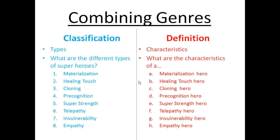Often classification and definition genres are combined. One of the key differences is that in classification, you are looking for types, whereas in definition, you are looking for characteristics.